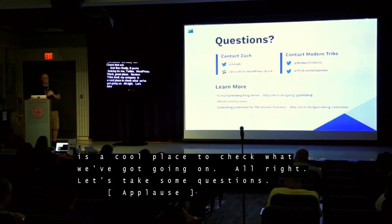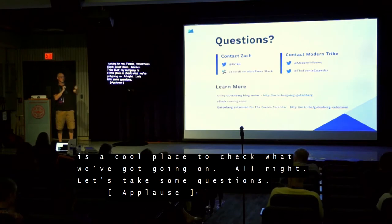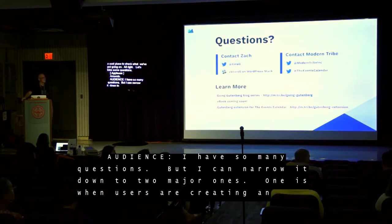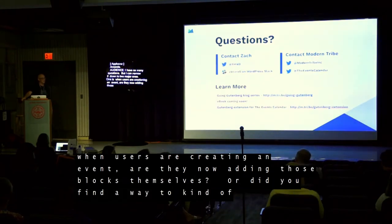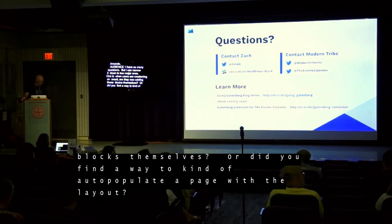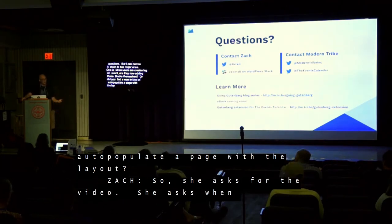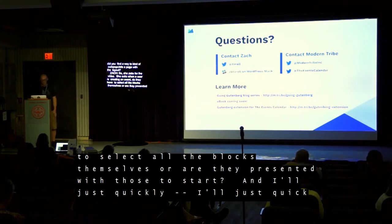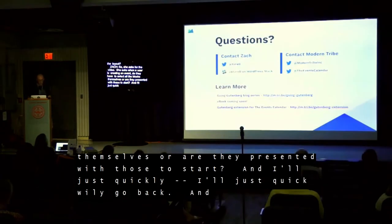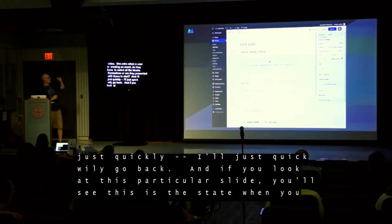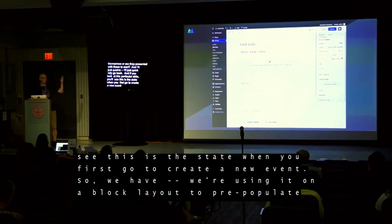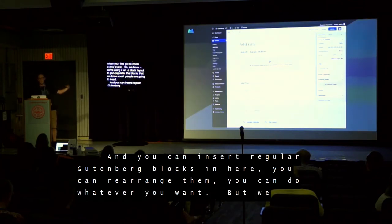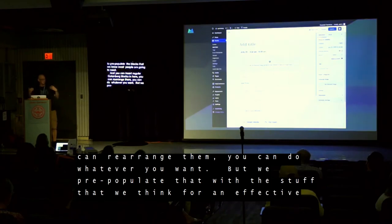Let's take some questions. One question: when users are creating an event, are they now adding those blocks themselves, or did you find a way to auto-populate a page with the layout? When you first go to create a new event, we're using a block layout to pre-populate the blocks that we know most people are going to need. You can insert regular Gutenberg blocks in here, rearrange them, do whatever you want, but we pre-populate that with the stuff that we think, for an effective event, you really should have.